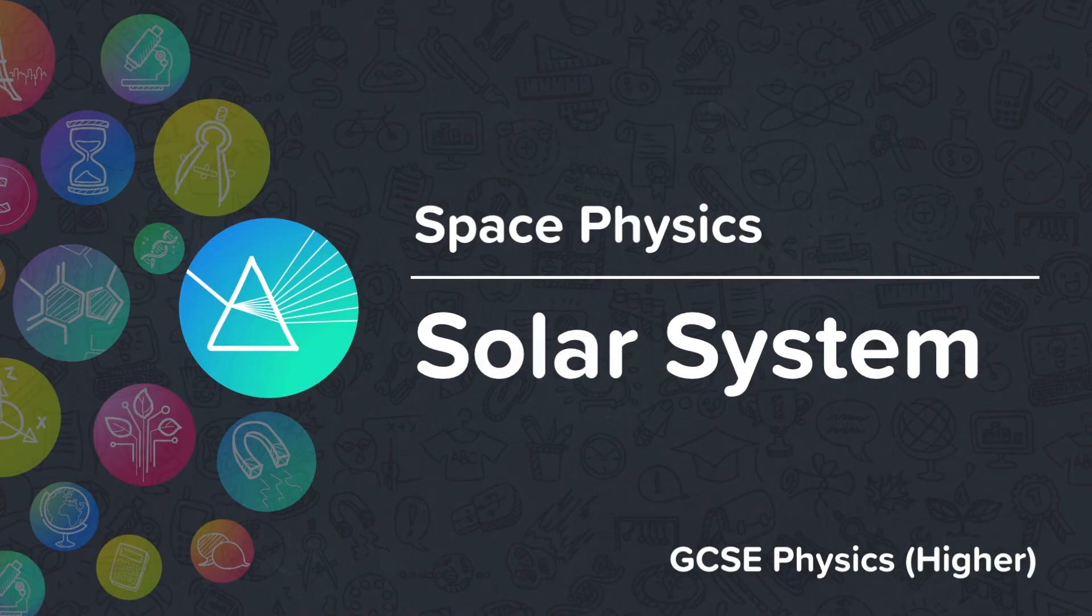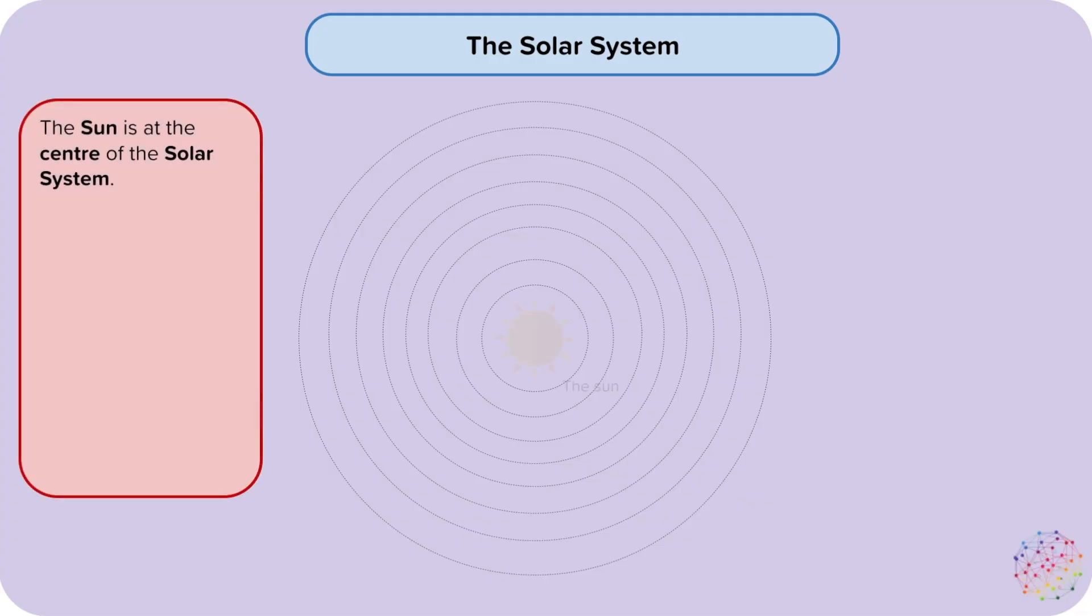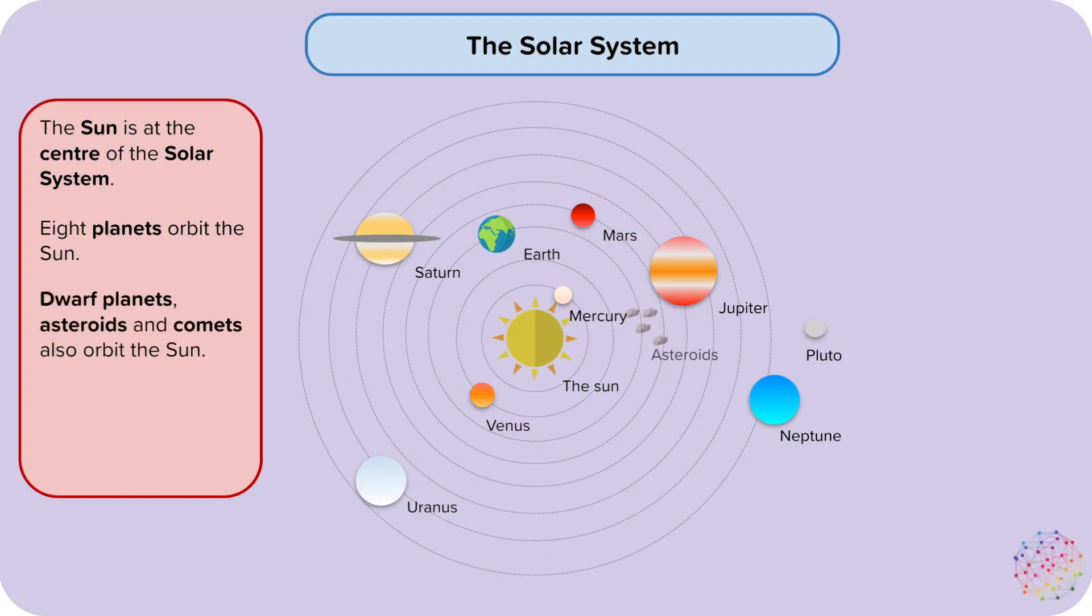This nugget is about the solar system. The sun is at the centre of the solar system. Eight planets orbit the sun. Dwarf planets, asteroids, and comets also orbit the sun. Moons and other satellites orbit the planets.